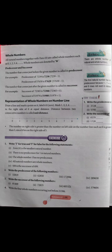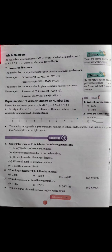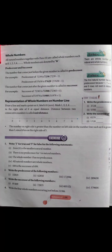'There is no predecessor for 1 in natural numbers.' 1 ka koi predecessor nahi hota natural numbers mein — sahi baat hai, isliye True. Kyunki 1 ka predecessor 0 hoga aur 0 natural number nahi hai. Next: 'The whole number 1 has no predecessor.' Whole numbers 0 se start hote hain, aur 1 minus 1 equals 0, so 1 ka predecessor 0 hota hai — yeh False hai.